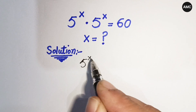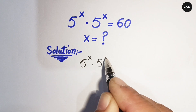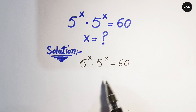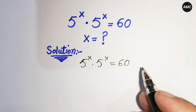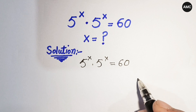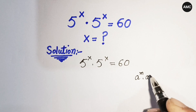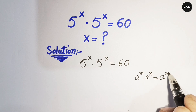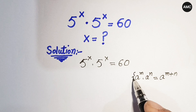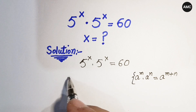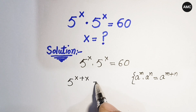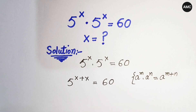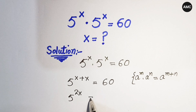We have 5 to the power x times 5 to the power x is equal to 60. The bases are the same, so the powers will be added according to the exponential property: a to the power m times a to the power n equals a to the power m plus n. Applying this rule, we get 5 to the power x plus x, which is 5 to the power 2x, equal to 60.